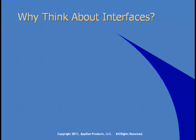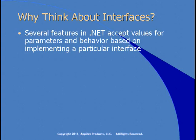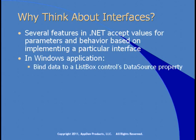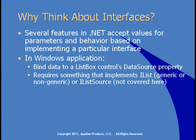Why should you think about interfaces? Several features in .NET accept values for parameters based on implementing a particular interface. For example, in a Windows application, if you want to bind data to a list box control's data source property, this requires something that implements the IList interface. If your object implements IList, you'll be able to display the contents of your list within the list box without writing any code — just set the data source property equal to your object.